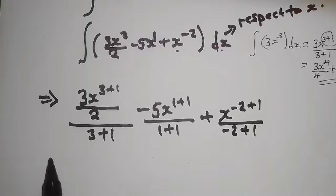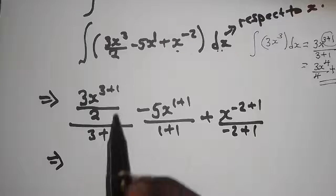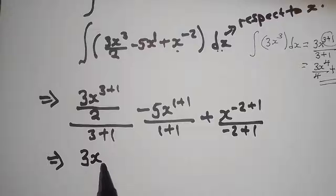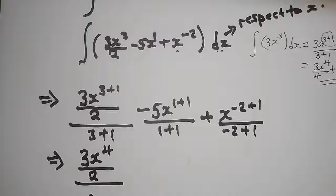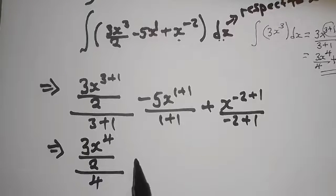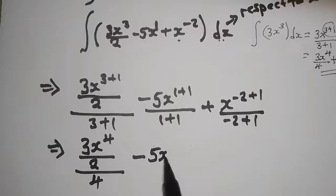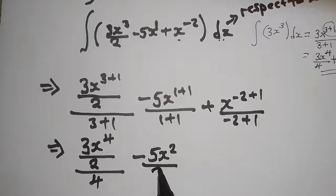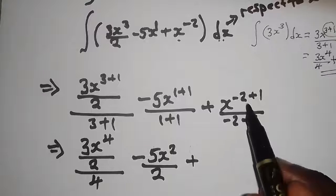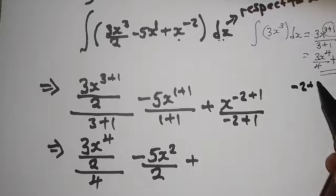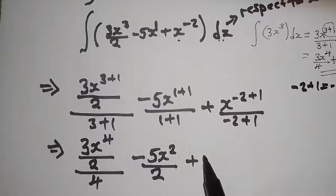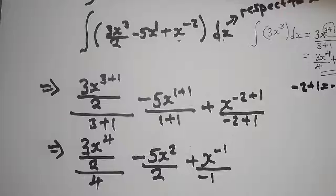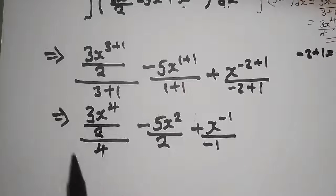Now simplifying: we get 3x to the power 4 divided by 2 over 4, minus 5x to the power 2 over 2. For the last term, negative 2 plus 1 is negative 1, so we get x to the power negative 1 over negative 1.